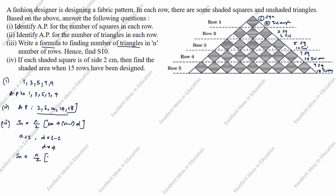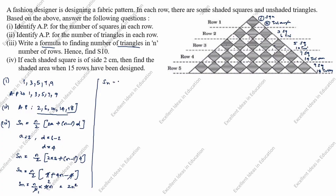So S_N = N/2 × (2×2 + (N−1)×4) = N/2 × (4 + 4N − 4). The 4 and −4 cancel, giving S_N = N/2 × 4N = 2N². So the formula is S_N = 2N².